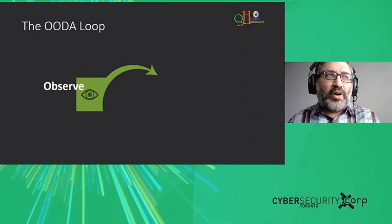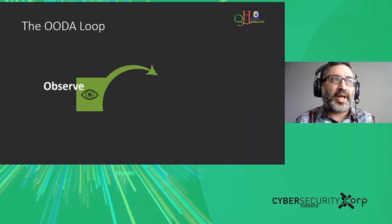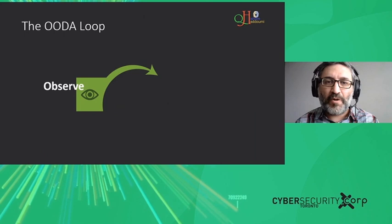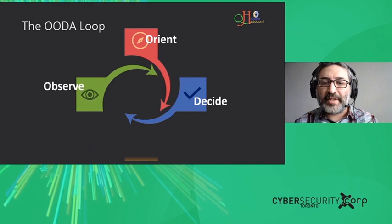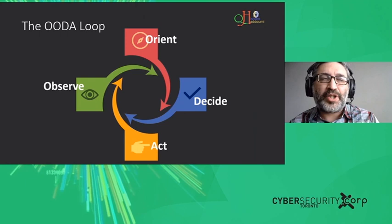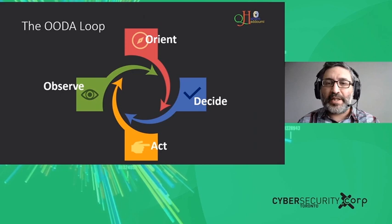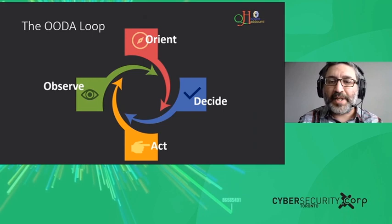Basically, all of cybersecurity and many cyber actions against security are based on something called the OODA loop — four principles: Observe, Orient, Decide, and Act. This principle was created by General John Boyd in the U.S. Marine or Navy, and we use that concept for everything that is security.